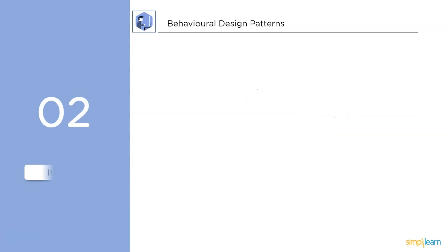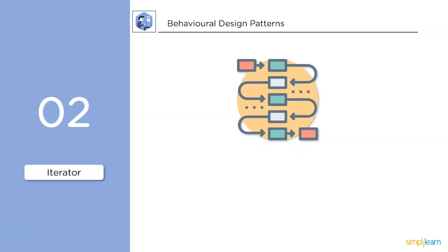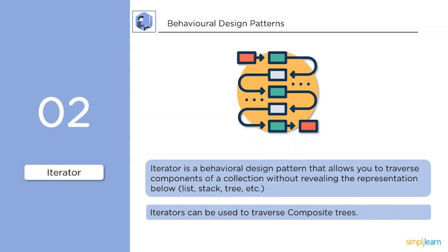Iterator is a behavioral design pattern that allows you to traverse components of a collection without revealing the underlying representation — that is, list, stack, tree, etc. Iterators can also be used to traverse composite trees.